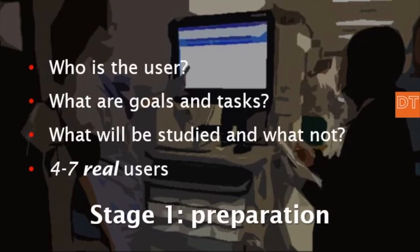To set up a contextual inquiry we have a couple of steps. The first stage is to prepare well. A contextual inquiry requires a lot of effort so you better prepare yourself really well. You have to find out who is the user you want to interview, what are their goals and tasks, and because tasks are quite large you need to decide upfront what you will study and what you will not. Prepare yourself for four to seven interviews and accept that it will take at least a month to get it organized and done.